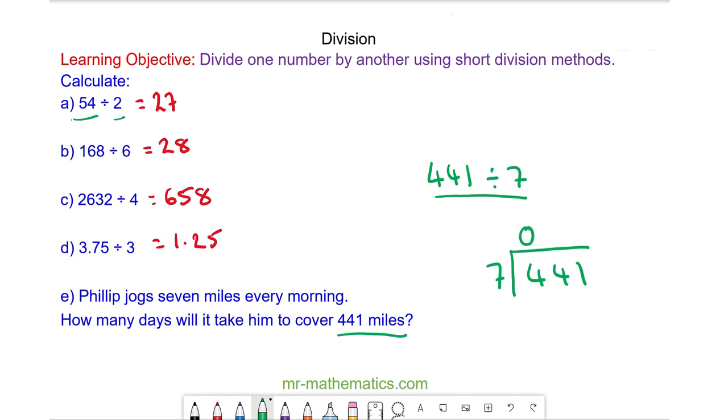We have 7s into 4 which don't go. So we carry the 4 to the next column.